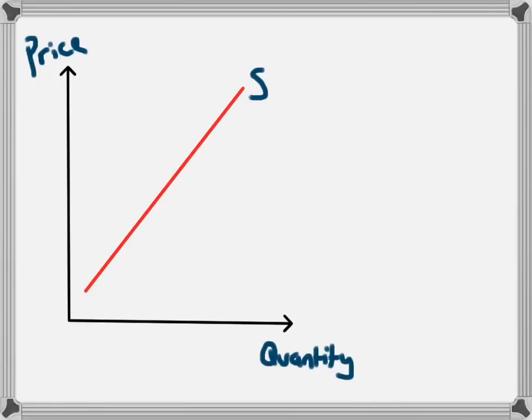A change in the price will lead to movements along the supply curve, but some other changes can make the curve move altogether. On this diagram, the price is P1, and the quantity that will be supplied at this price is Q1. A change in some other factor may cause this to change.